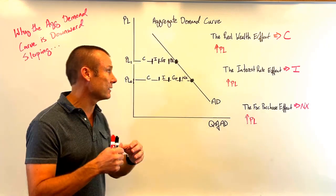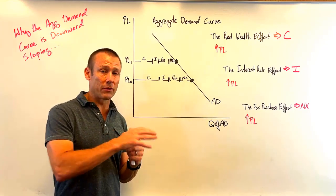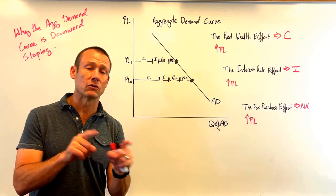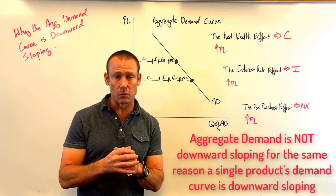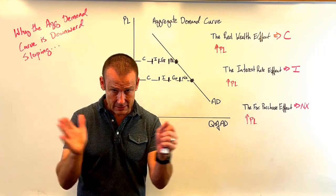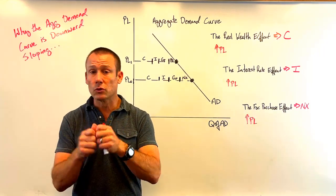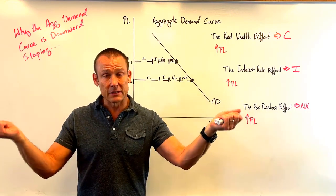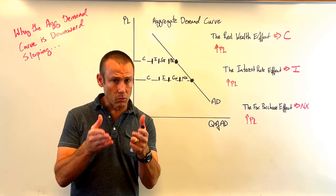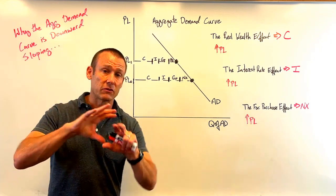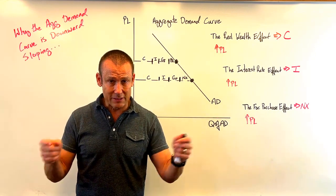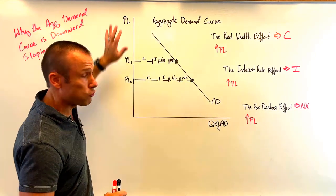Why is this curve downward sloping? Important: the aggregate demand curve is NOT downward sloping for the same reason the demand for a single good is downward sloping. The demand for a single good slopes down mainly because of the substitution effect — when the price of a good goes up, ceteris paribus, we substitute away to substitute goods. But that works because we assume all other prices remain constant, making them relatively cheaper.